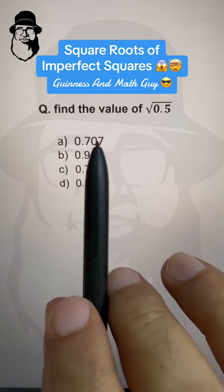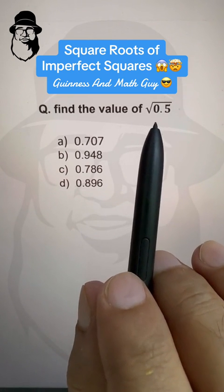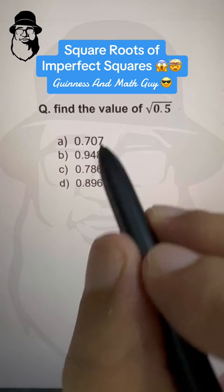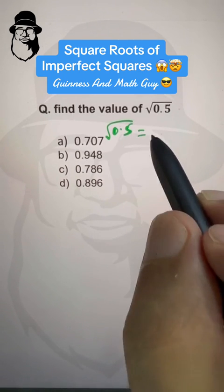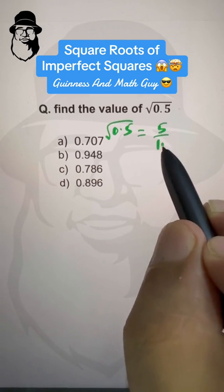Let's do same thing here, find the value of square root of 0.5. So, 0.5, we can write it as 5 over 10, right?